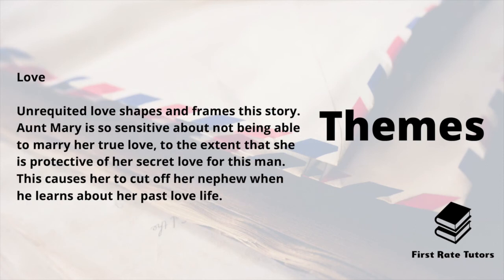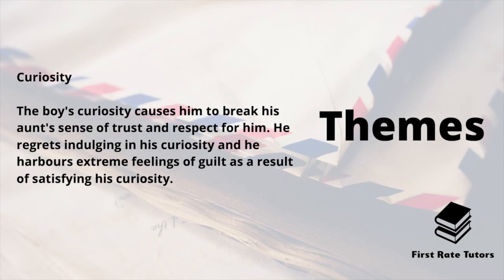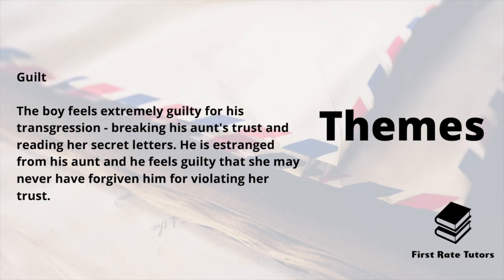The other theme is that of love. Unrequited love shapes and frames the story. Aunt Mary is so sensitive about not being able to marry her true love that she is protective of her secret love for this man, and this causes her to cut off her nephew when he learns about her past love life. The other theme is that of curiosity. The boy's curiosity causes him to break his own sense of trust and respect, and he regrets indulging this curiosity, harbouring extreme feelings of guilt as a result.